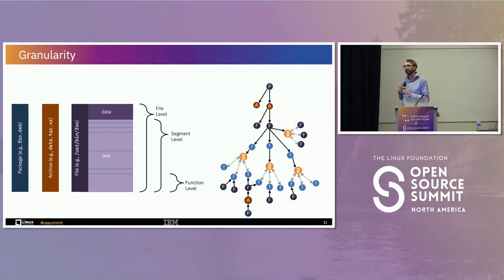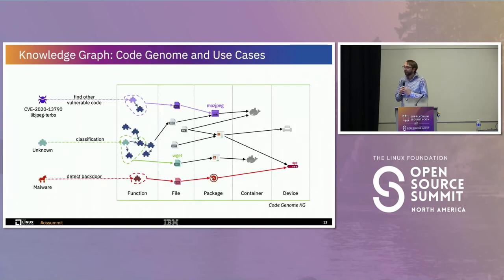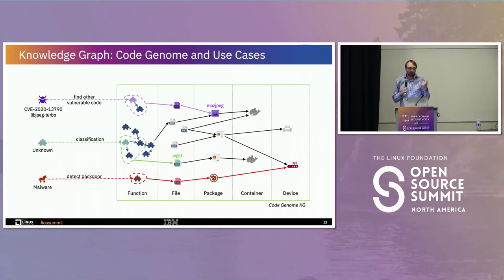We can use this to make connections for something new and unknown. If we have some ground truth information, we can identify what something is, where it came from, and track it back in time. At the end of the day, we produce a very large, very complete knowledge graph of all the software, all the code, all the functions, where they came from and how they're used.